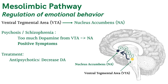So how do we treat these patients? We give them antipsychotics, and when we give antipsychotics, remember, it decreases dopamine. When we decrease the dopamine level, not only does it affect the mesolimbic pathway, it's going to affect all the other pathways.